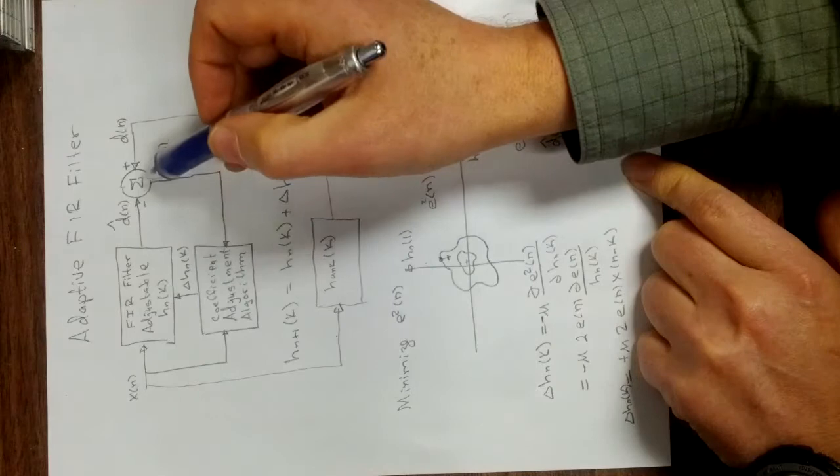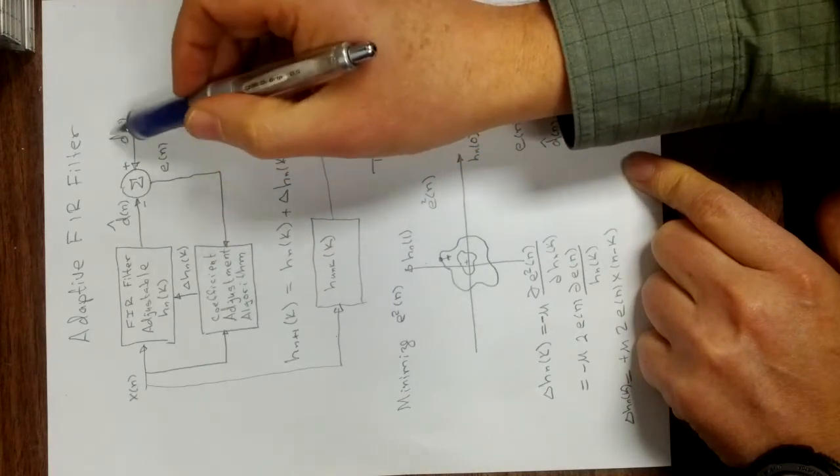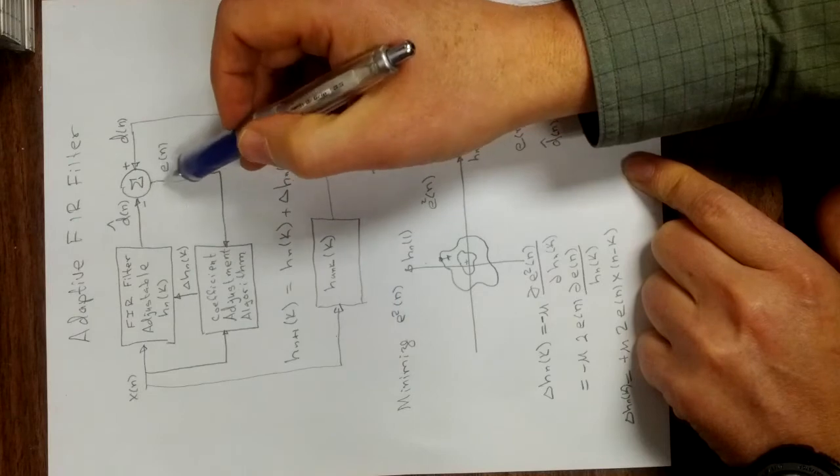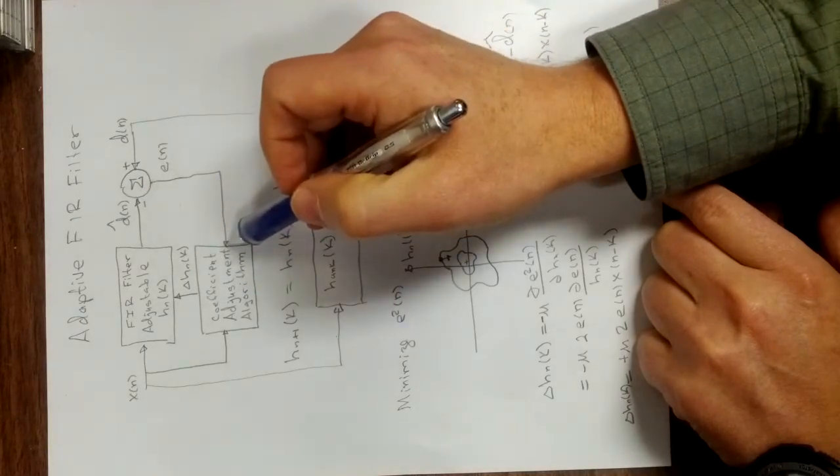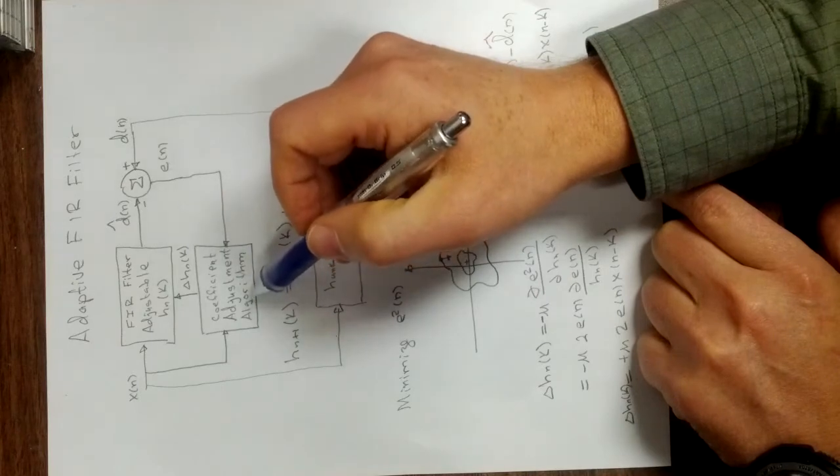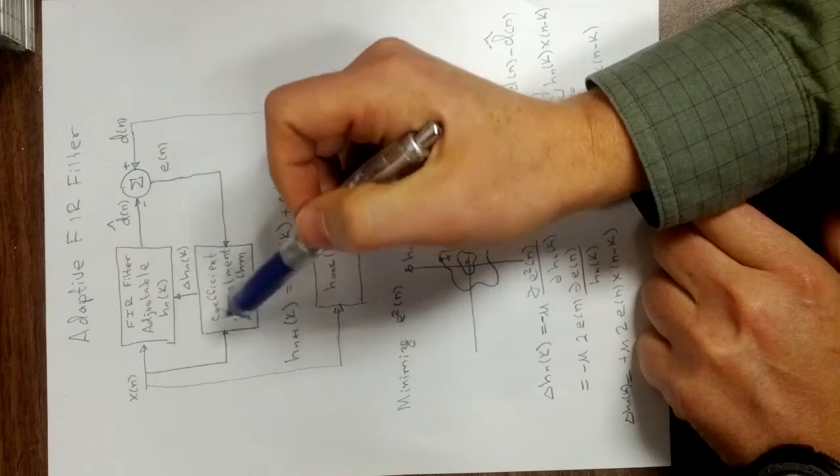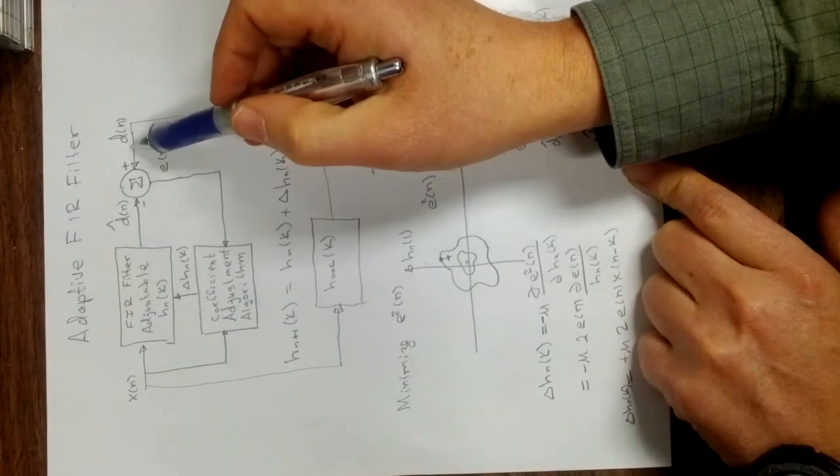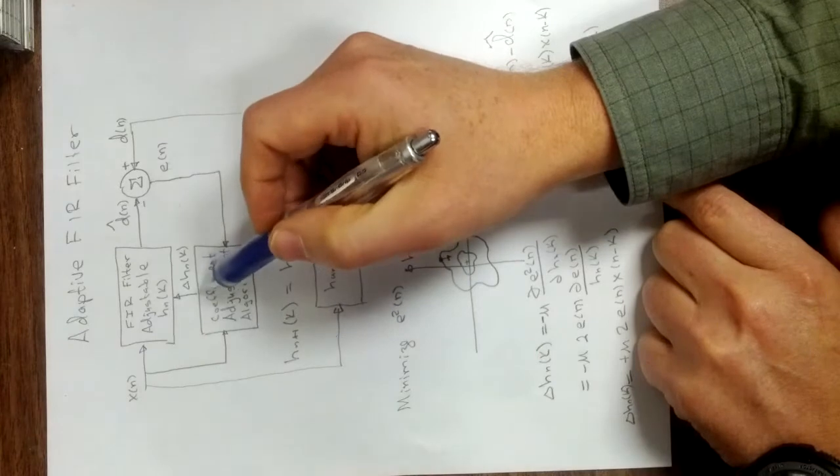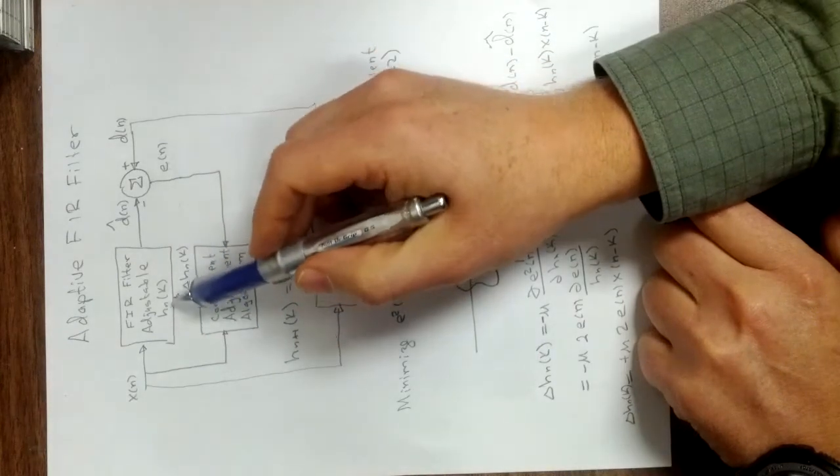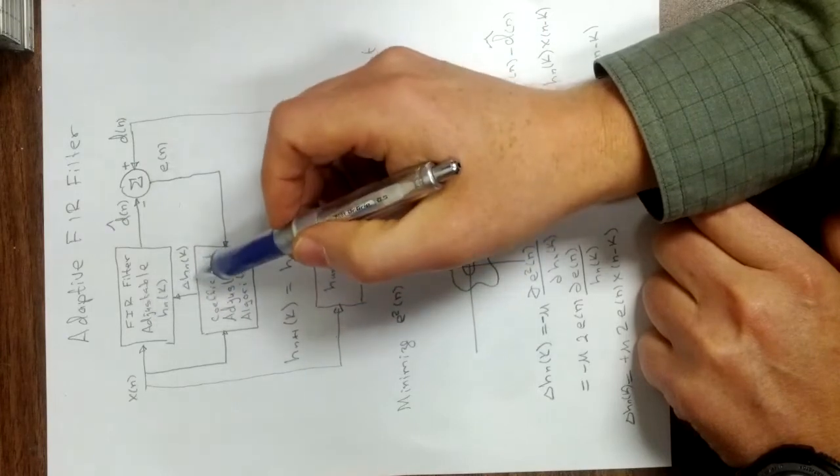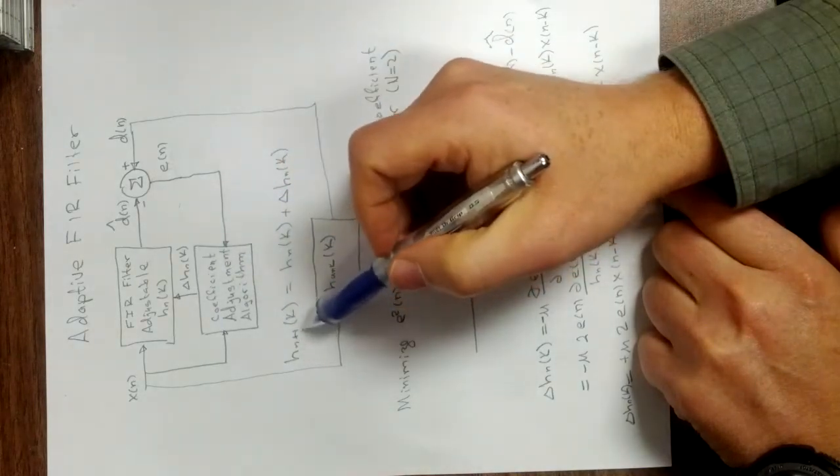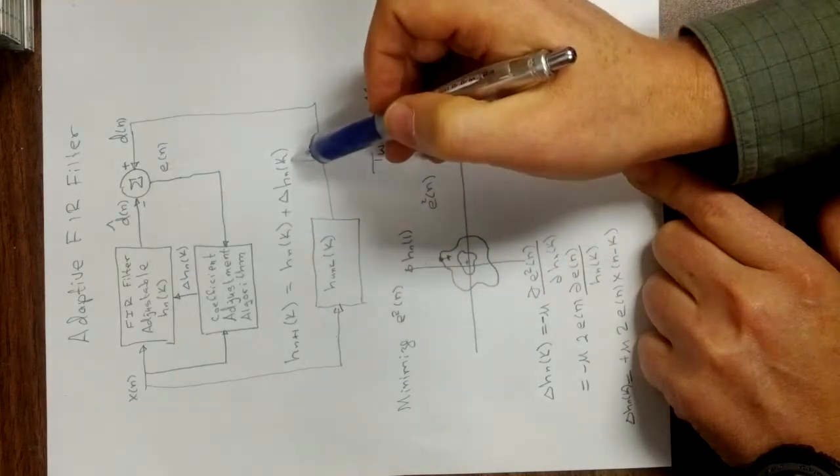We take that d hat of n and subtract it from a desired output d of n. The difference is the error e of n and that we feed into a coefficient adjustment algorithm. Also, into this coefficient adjustment algorithm, we put the input x of n. So it knows what's going into the filter, it knows what the error is between what we desire and what's actually coming out, and it uses that information to make an adjustment to the FIR filter coefficients by an amount delta h sub n of K.